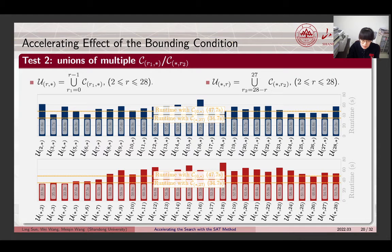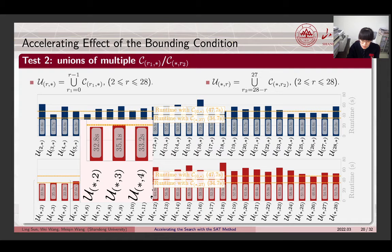The second test checks unions of multiple sets defined in the first test. As in the figure, all the 54 sets achieve improvements on the runtime in almost equal measure. Probably, we cannot significantly improve the runtime with C0 star and C star 27 by combining multiple sets. Besides, this test indicates that adding all the bounding conditions into the SAT problem does not always give the best performance. Furthermore, the union sets U R star and U star R with R being a small integer might have good performances.